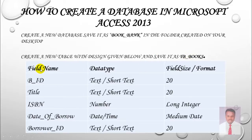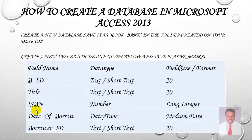We have the field names, data type, field size, and format. For example, BID is a field name — it's a book ID. If you're using Office 2010, you want to use text; if you're using Office 2013, use short text. Field size is 20. Title is short text, size 20. ISBN is long integer. Date of borrow is date and time, medium date format. Last one is borrower ID, short text, field size 20.